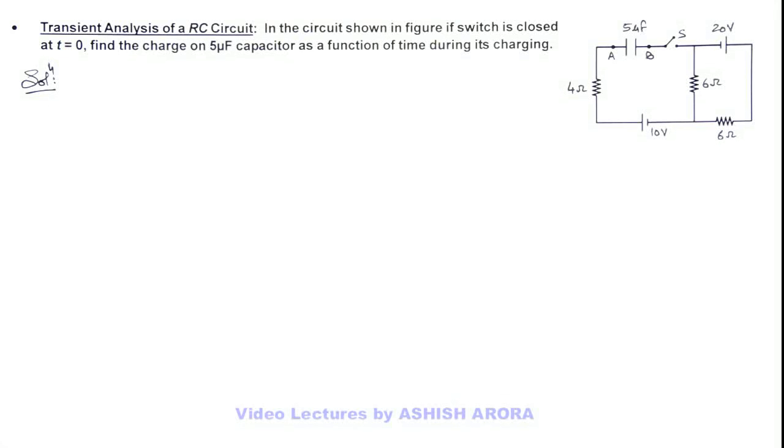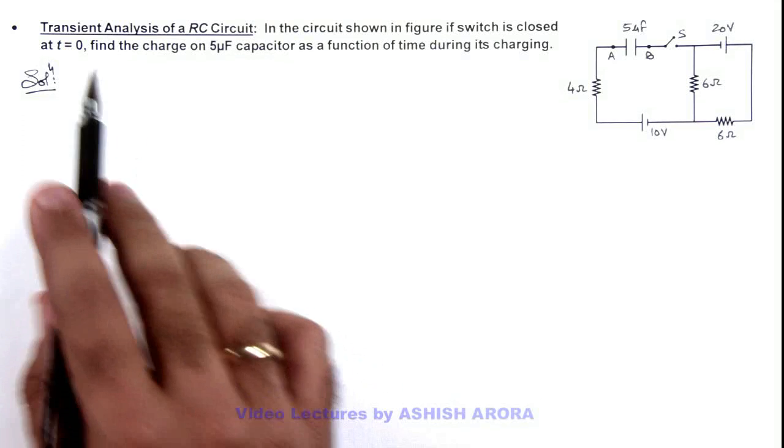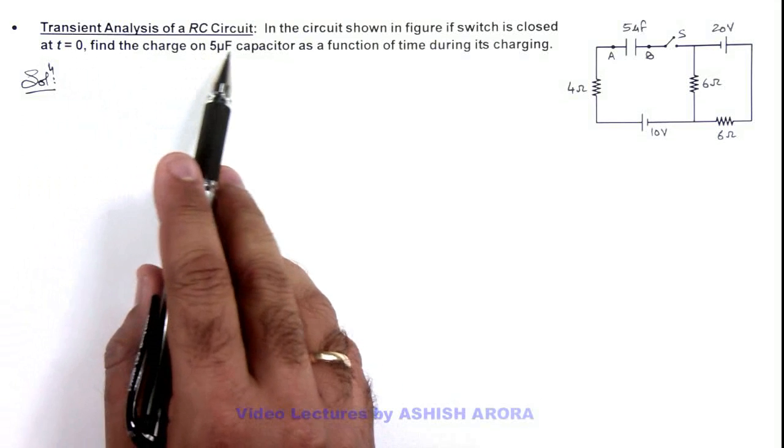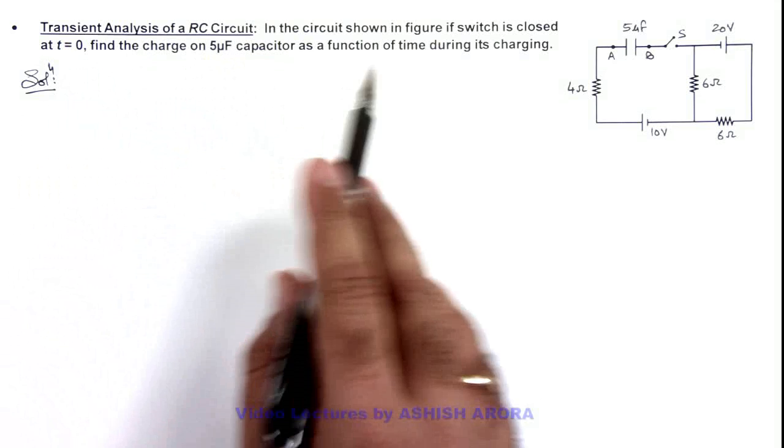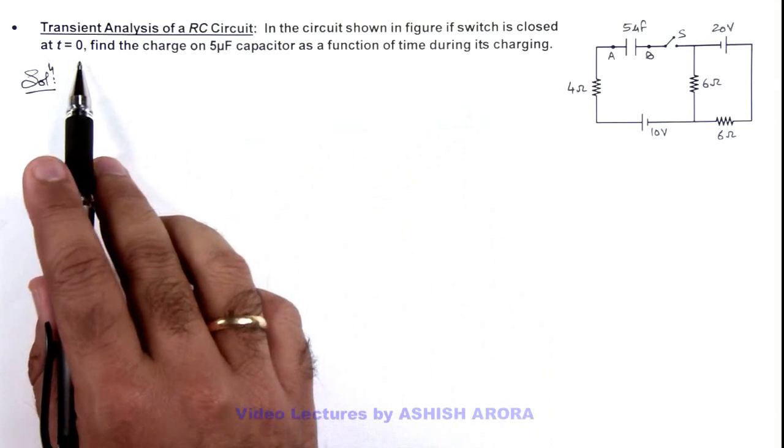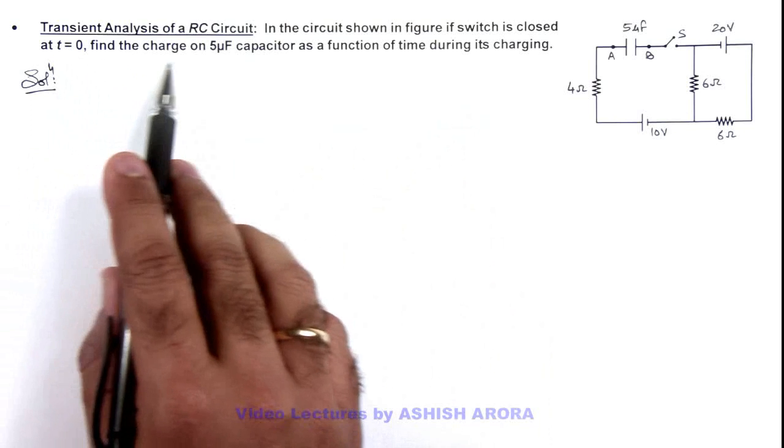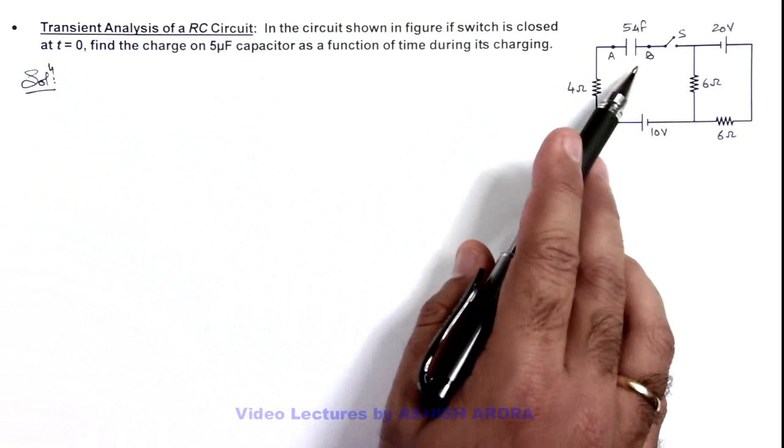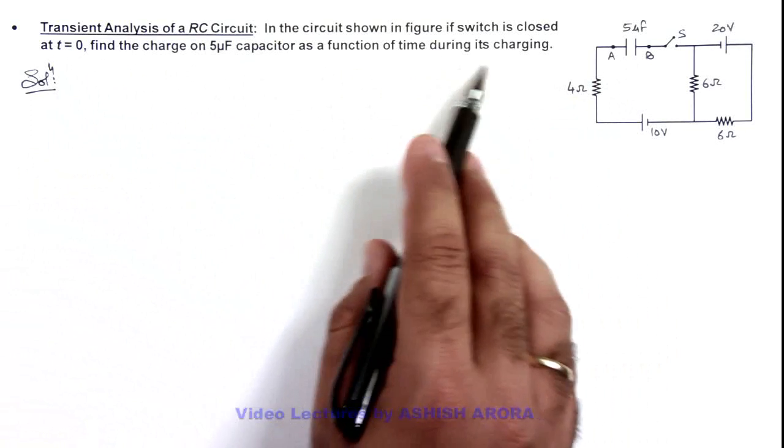In this illustration, we are going to discuss the transient analysis of an RC circuit. In the circuit shown in figure, if the switch is closed at t = 0, we are required to find the charge on the 5 microfarad capacitor as a function of time during its charging.